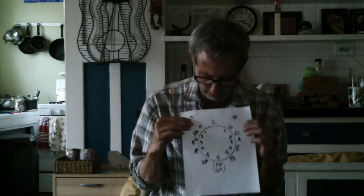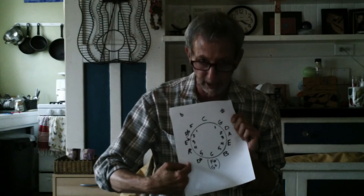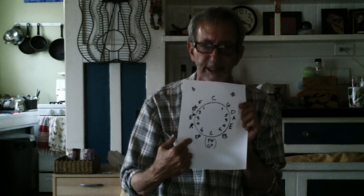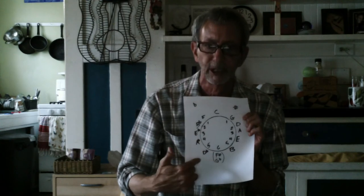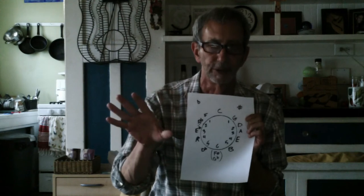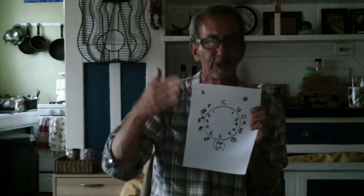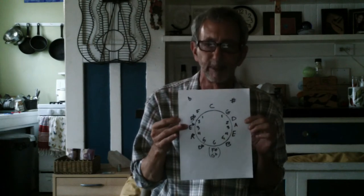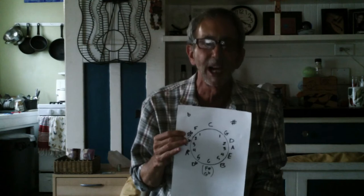Now let's talk about what I call hypothetical keys. In some depictions of the circle of fifths, the sharp keys keep going a few more steps — for example, listing a key of C-sharp, which does exist. C-sharp is the same note as D-flat. But the sharps keep increasing, so you'd have seven sharps in the key of C-sharp. And what about making E-flat into D-sharp? How would you like to read music with nine sharps in your key signature? Well, that's what you'd get.